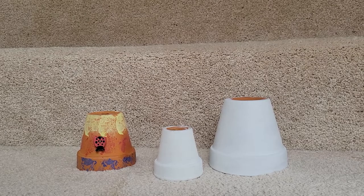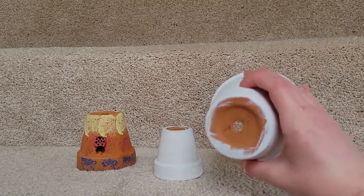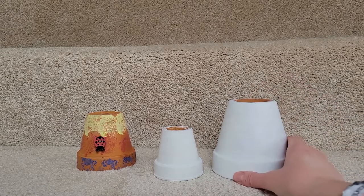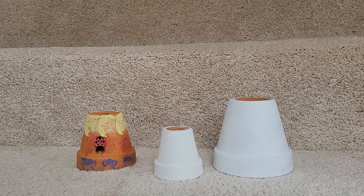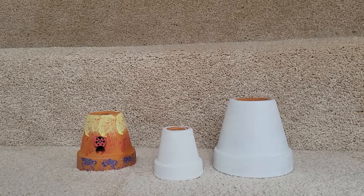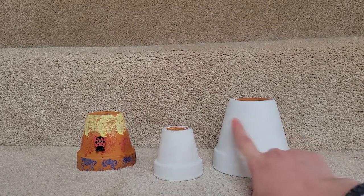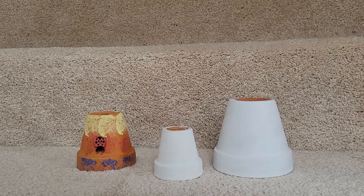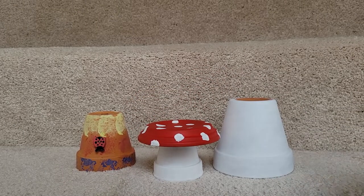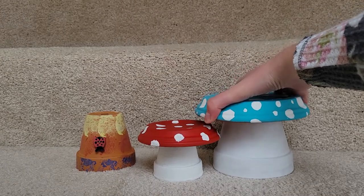Typically you start with a terracotta pot. Mine have holes but they don't need to have the hole, and there's some different sizes depending on what you're using for the globe at the top. These two are already painted white because I had used them in a previous project to make mushrooms out of them.